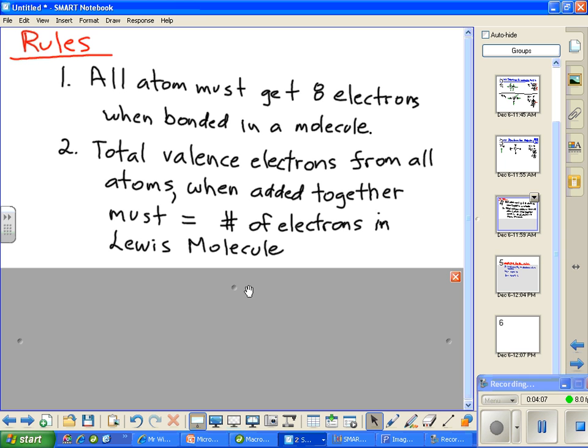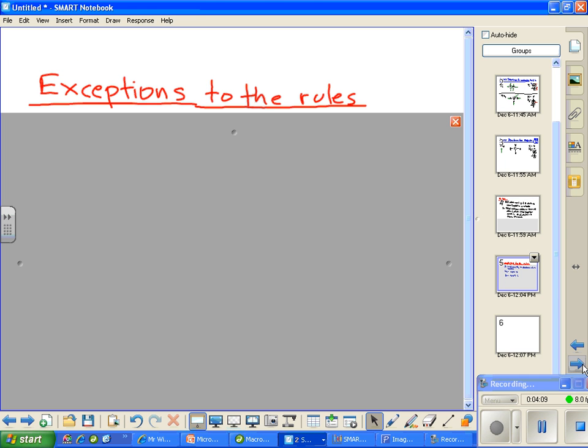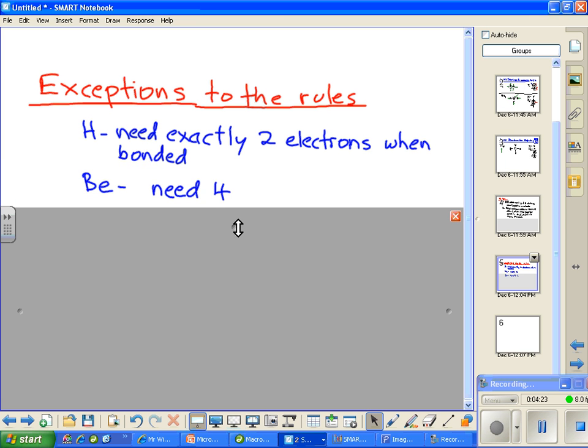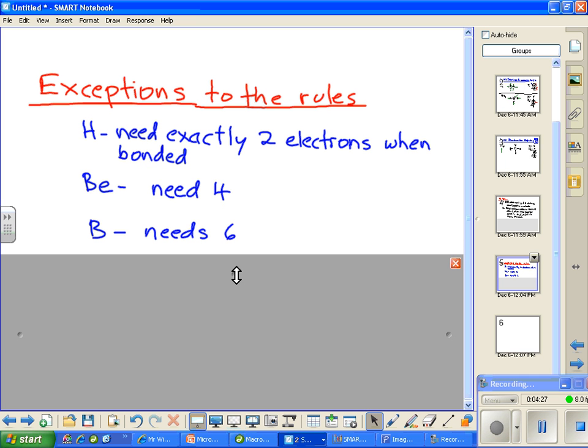Now let's look at the exceptions. There's only three of them. First, hydrogen needs exactly two electrons when bonded—no more, no less. Beryllium needs four. Boron needs six. Exactly six, exactly four, exactly two. No more, no less. Now you know how to draw Lewis structures. Thank you for watching.